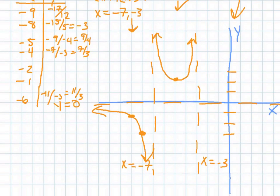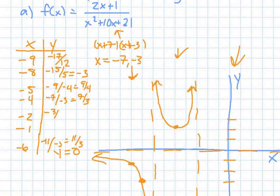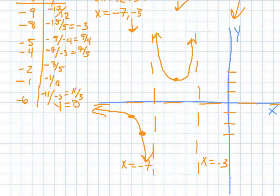On the right side of x = -3, plugging in -2 gives -3 over 5 times 1, so -5/3. Plugging in -1 gives -2 over (-1)(1) times 6×2 = 12, so -1/12. So the graph on the right side gets very close to the asymptotes and approaches y = 0 as x goes to infinity.